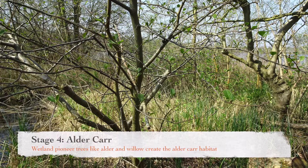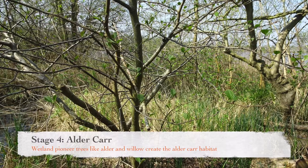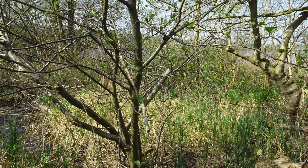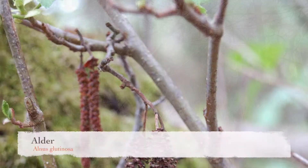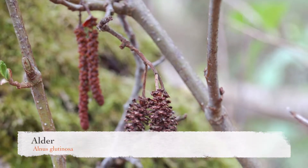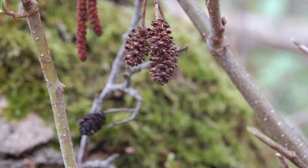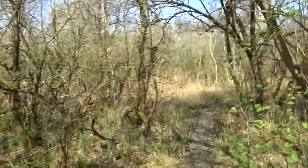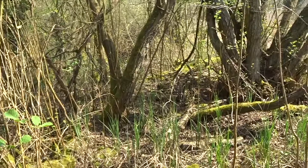Stage 4: Alder carr. Wetland pioneer trees start to appear, such as alder and willow. The habitat has now become alder carr. The alder trees provide shade for new trees and plants to grow, as well as a variety of different habitats for many species of fungi, birds, mammals, and insects.